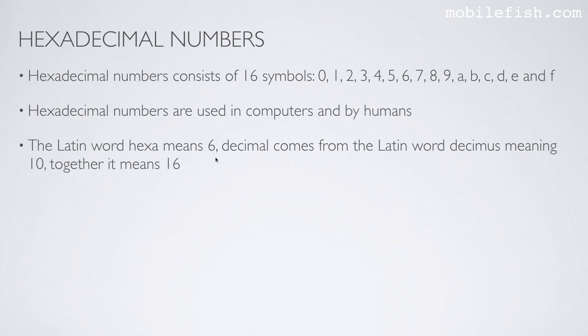The Latin word hexa means 6, decimal comes from the Latin word decimus, meaning 10, and together it means 16. So here are a few hexadecimal numbers: 57AA, 57 capital A. It doesn't matter if you write it lowercase or uppercase. And here are a few others.